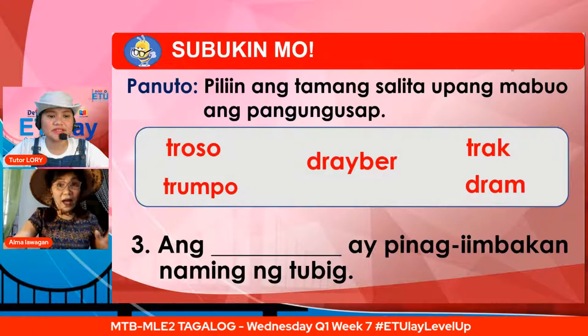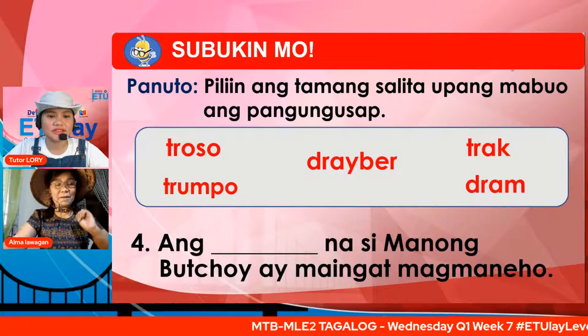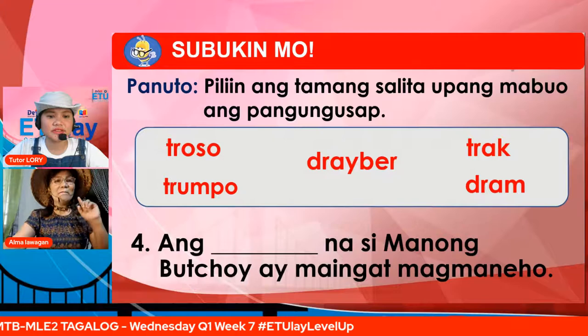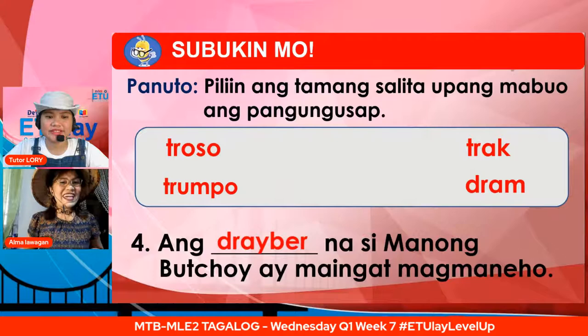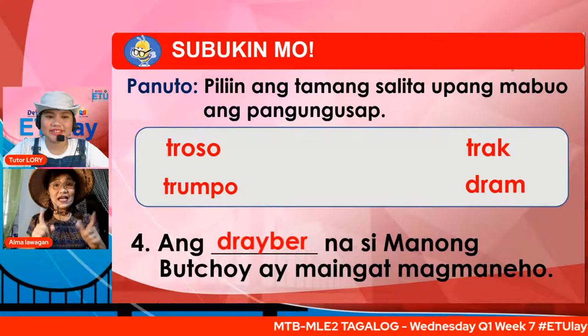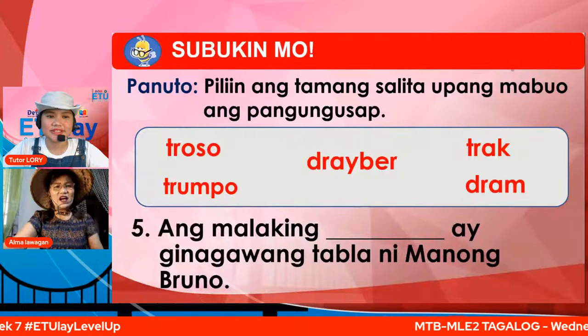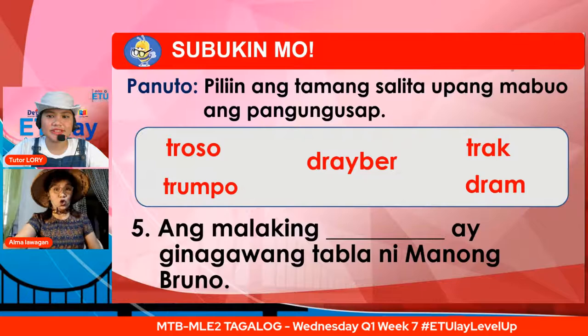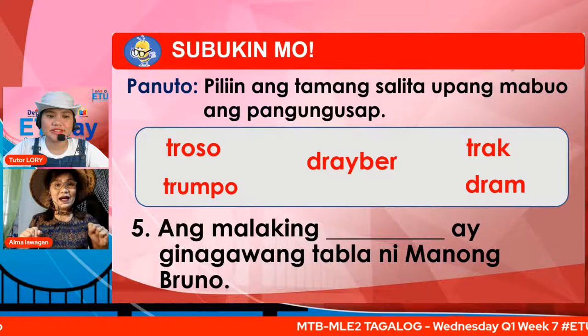Pang-apat na bilang: ang patlang na si Manong Gutoy ay maingat magmaneho. Ano kaya ang magmamaneho ng mga driver? Kung ang isinulat mo sa chatbox ay driver, tama. Binigyan ko kayo ng clue para sa inyong sagot. Limang bilang: ang malaking patlang ay ginagawang tabla ng Manong Gutoy. Ano kaya ang ginagawang tabla? Kung ang isinulat mo sa chatbox ay troso, tama ang iyong sagot.